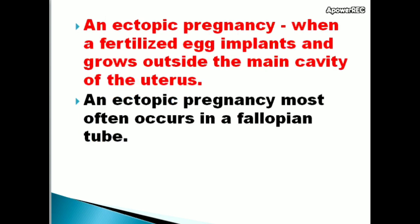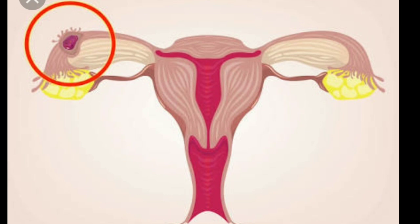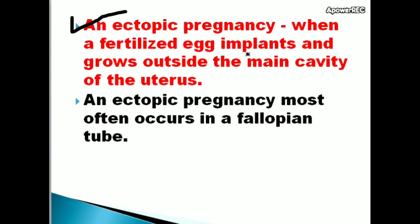An ectopic pregnancy is when a fertilized egg implants and grows outside the main cavity of the uterus. An ectopic pregnancy most often occurs in a fallopian tube.